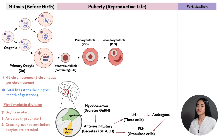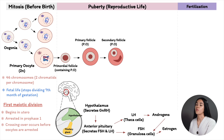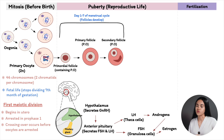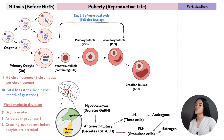If a follicle is selected as the dominant follicle — the one to be ovulated — from the 10 to 25 follicles that develop into secondary follicles during days 1 to 7 of the menstrual cycle, around day 7 only one becomes dominant. This is the tertiary or Graafian follicle. From day 7 to 14, this dominant follicle matures, completes meiosis 1, and the primary oocyte becomes a secondary oocyte just before ovulation.